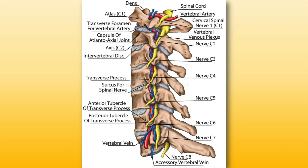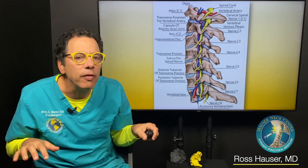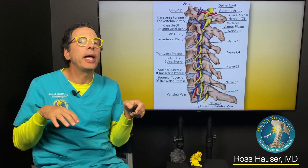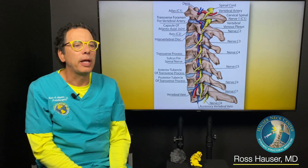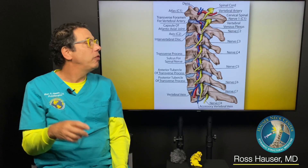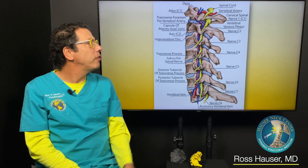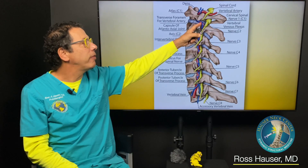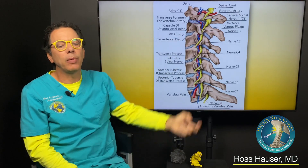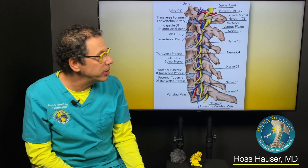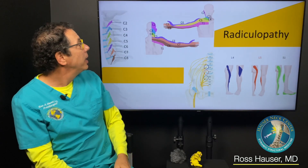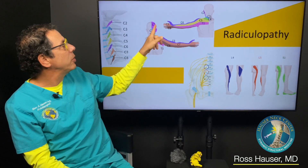So the treatment is going to be optimizing the neck curve, opening up the C2 space, not doing activities like jutting the head forward — avoiding a forward head lifestyle — and keeping the C2 nerve space open. And if you have ligament injury in the upper cervical region, get some prolotherapy.